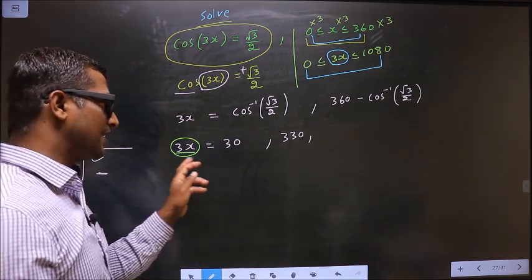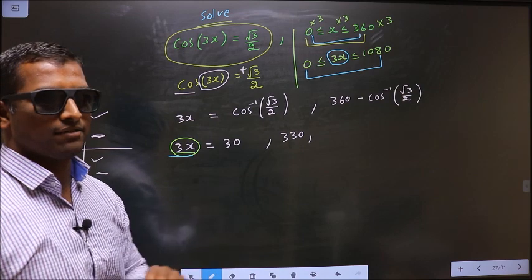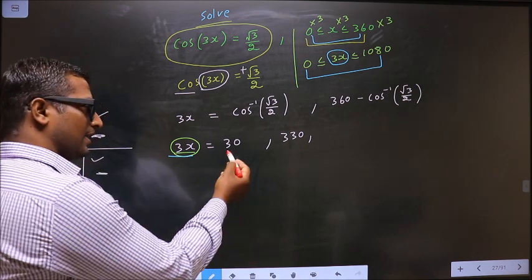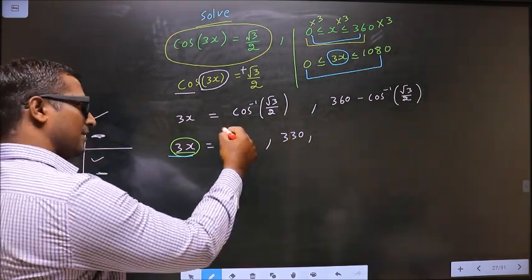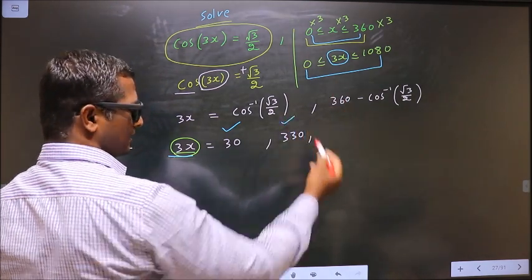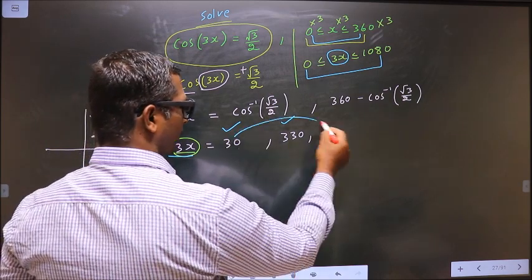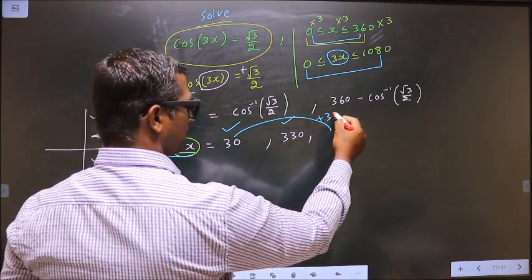Now let us get the values for 3x lying in that interval. Does 30 lie in that interval? Yes, accept it. Does 330 lie in that interval? Yes, accept it. Now to get another value, you add 360 to this.